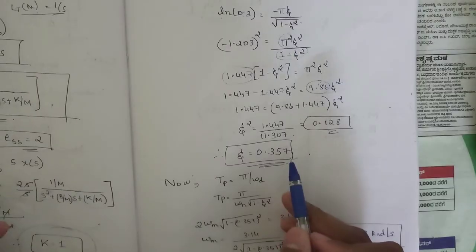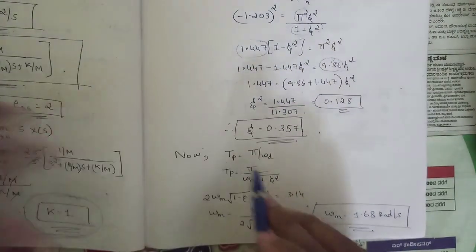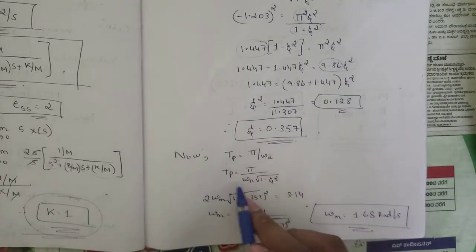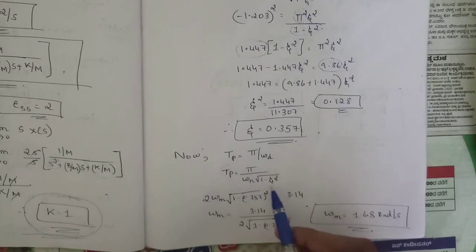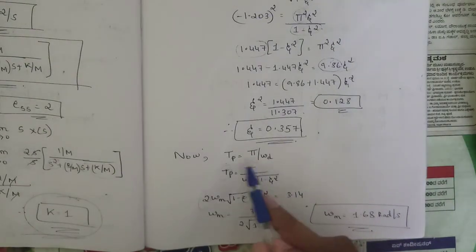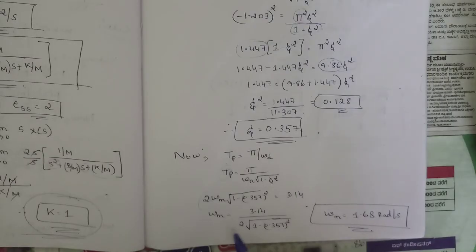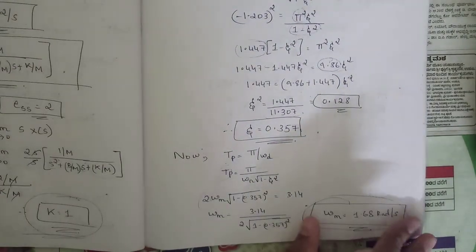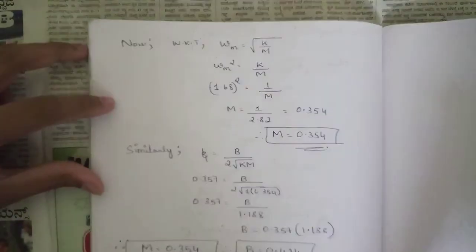Now apply tp = π/ωd = π/(ωn·√(1−ζ²)). With tp = 2 and ζ = 0.357: 2·ωn·√(1−0.357²) = π = 3.14, so ωn = 3.14 / (2·√(1−0.127)) ≈ 1.68 rad/s.